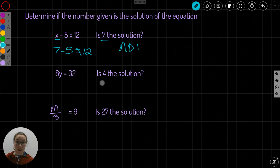8y equals 32. Is 4 the solution? Well, 8y is the same as 8 times y. So 8 times 4 equals 32. 8, 16, 24, 32. Yes, 4 is the solution. Yes.